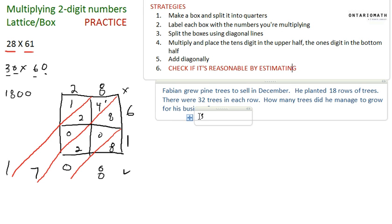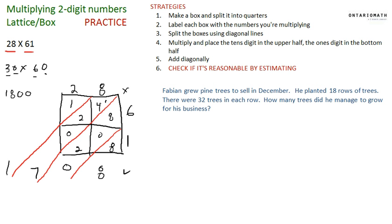So knowing that, I know it's going to be a multiplication question. I'm going to try it out using the lattice box method. Here it goes. I make the box, let's see how fast I can do this. Make the box, and here's the box, and it's 18 times 32.